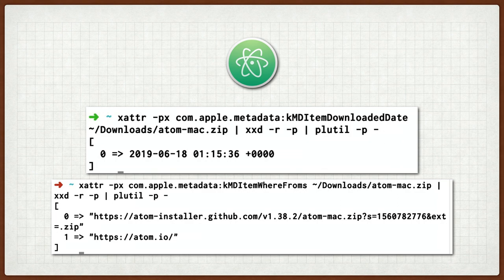Here we're going to chain a few commands together to actually look at what follows. We're using a couple of flags with xattr. The -p flag makes it print the contents. -x makes it print it in hex instead of binary. And we're piping that through xxd, which decodes hex to a functional value. And then we're sending that to plutil to read the binary plist out to the terminal itself. This tells us that the file was downloaded on June 18th at 1:15 AM GMT, and it was downloaded as a referral from atom.io to a GitHub zip file stored at GitHub.